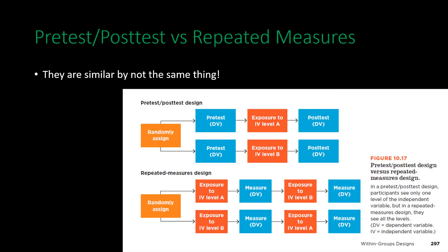A note about pre-test post-test designs versus repeated measures: they are very similar but not the same. In a pre-test post-test design, the dependent variable is measured twice, but participants are randomly assigned to receive only one level of the independent variable. In a repeated measures design, a participant is exposed to one level of the independent variable, measured on the dependent variable, then exposed to the other level and measured again. The random assignment in repeated measures isn't changing which level they receive — it's a counterbalancing situation where half see level A before level B and the other half see level B before level A.